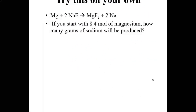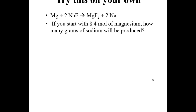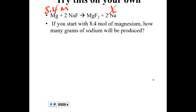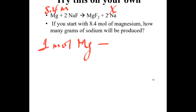Given this equation, if you start with 8.4 moles of magnesium, how many grams of sodium will be produced? From the balanced chemical equation, 1 mole of magnesium produces 2 moles of sodium.